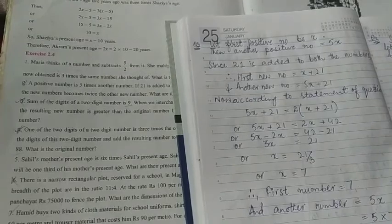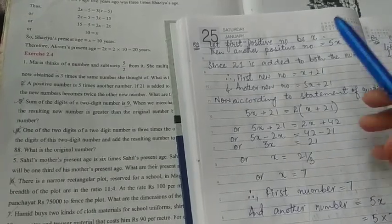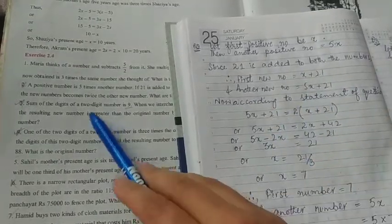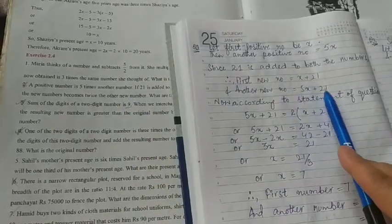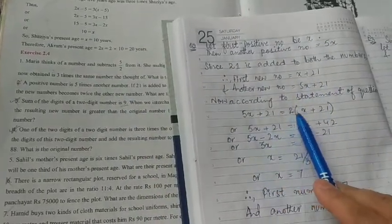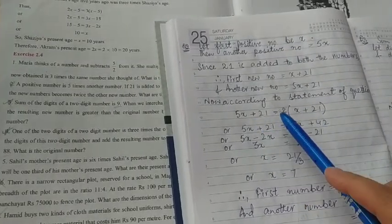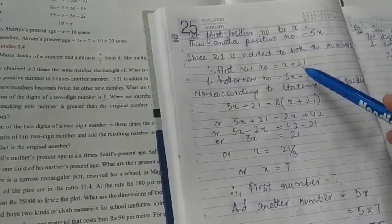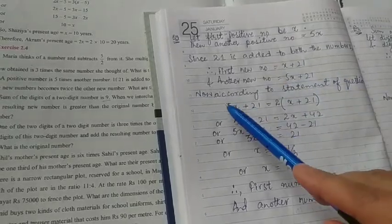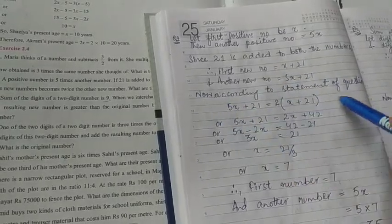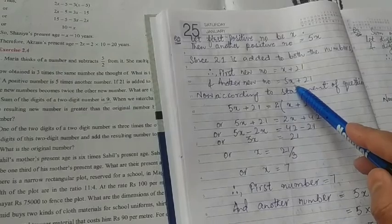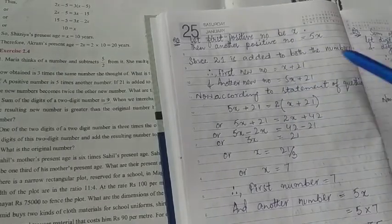Now there is one condition, one statement, that one number will be twice the other new number. That means the bigger number I've taken, that will be twice this number, twice of this number. Twice means we multiply by two the whole value. Okay, so now according to statement of question, five x plus twenty one is equal to twice, means two into x plus twenty one.